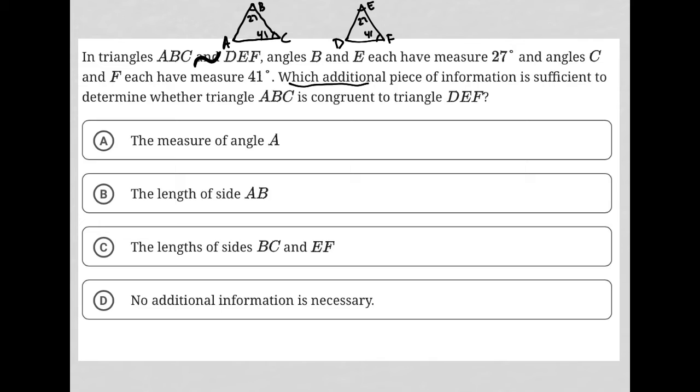Which additional piece of information is sufficient to determine whether triangle ABC is congruent to triangle DEF? First of all, we automatically know that A and D are the same because the sum of the three angles of a triangle must add up to 180. So if both of these angles are the same between the two triangles, then angles A and D must be equal to each other. So we already know that there's no need to provide that information.